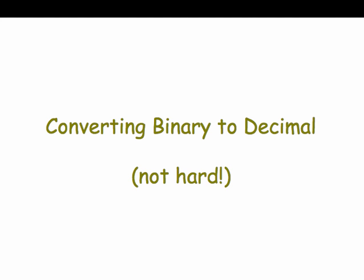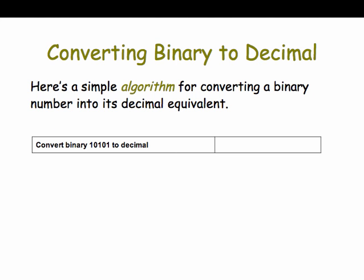Let's see how to read binary numbers — that means let's see how to convert them into decimal numbers. It's not hard. Here's a simple algorithm for performing the conversion. An algorithm is a step-by-step process and we're going to be studying algorithms later on in the course, so I'm not even going to define the term for now. I'm just going to show you some examples starting with this example.